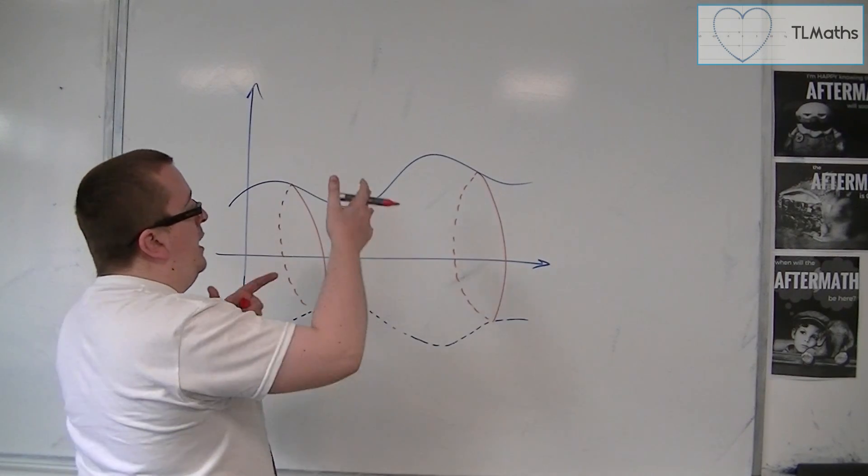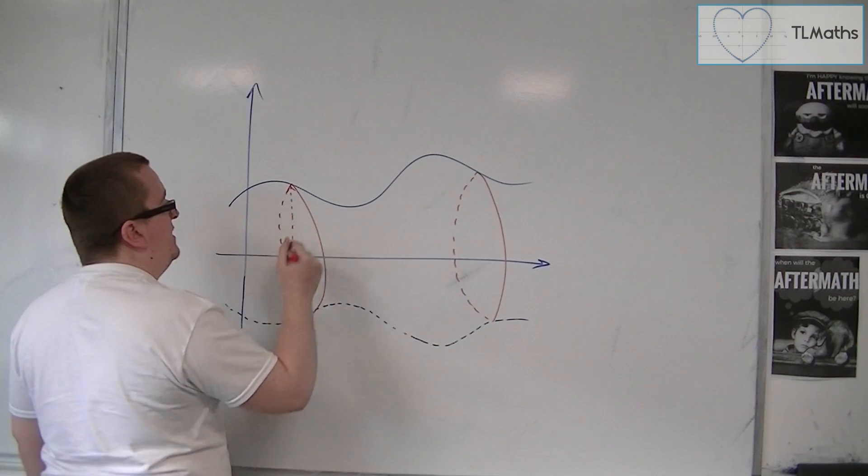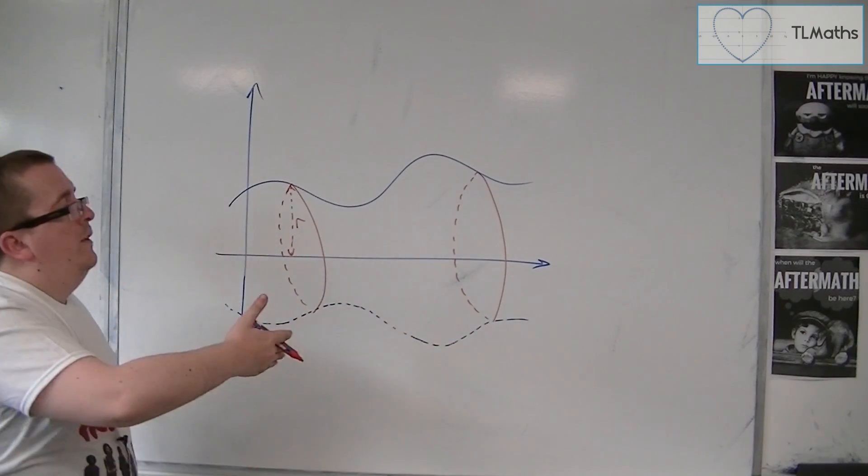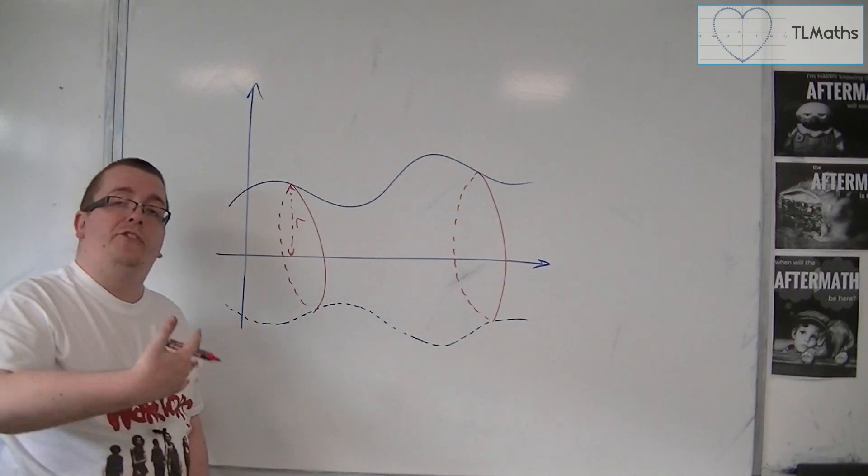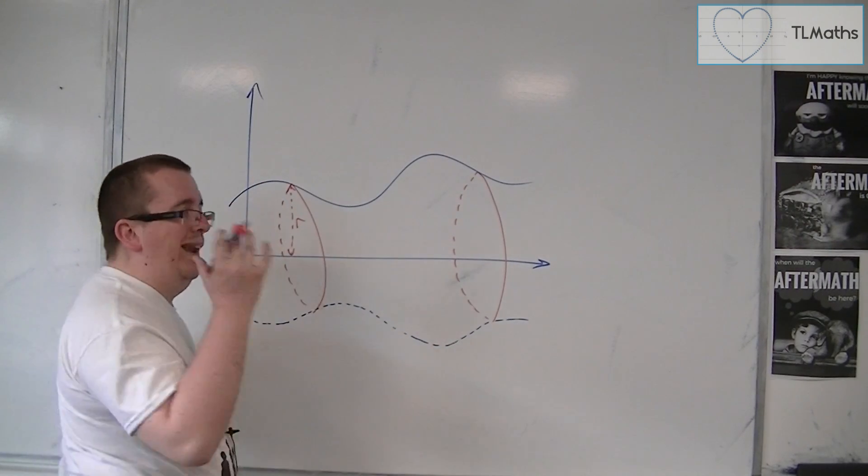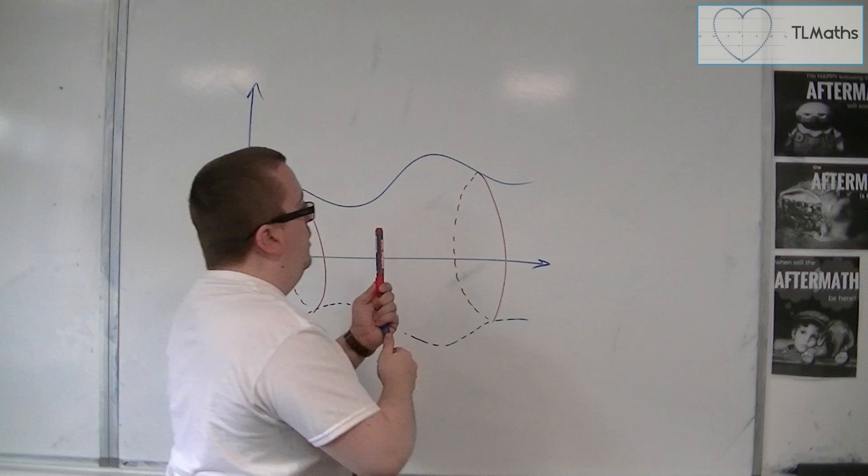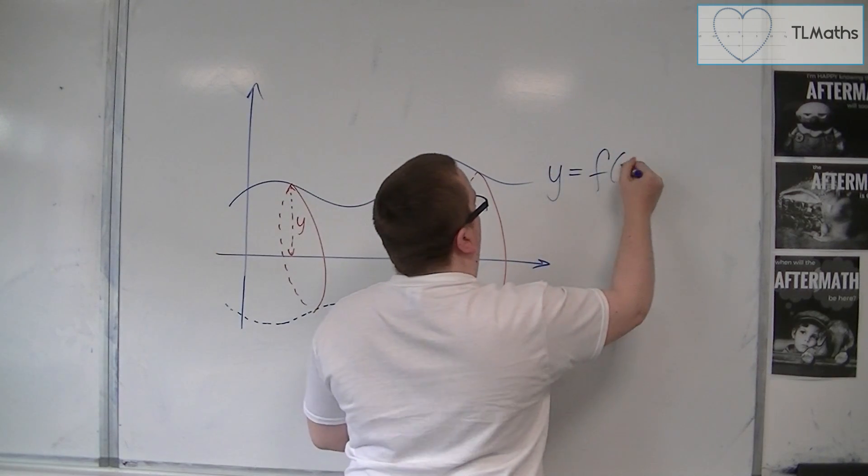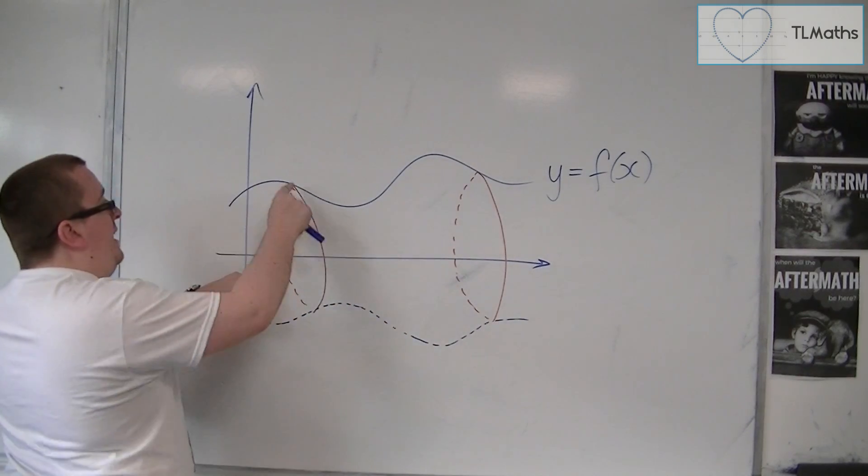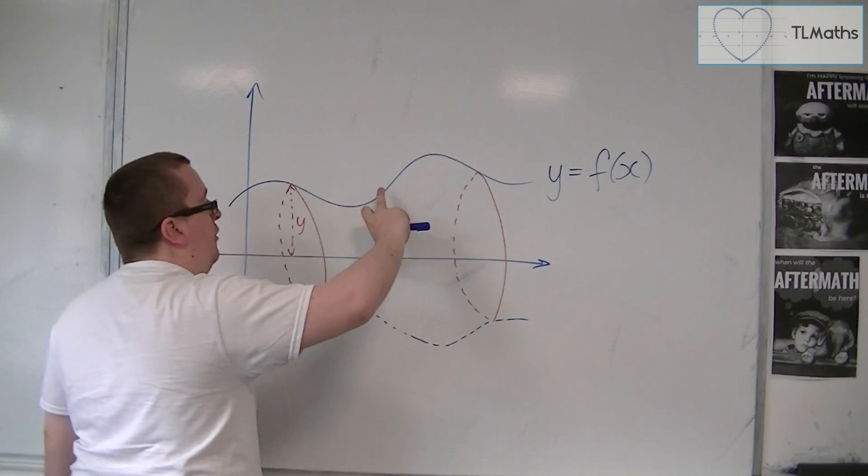For each cross section, each one will have a separate radius. Depending on where you make your cut, the circle will have a slightly different size, and so a slightly different radius. The radius and the size of the circle will actually depend on the y value. This curve will be a function of x, and for each x value, there will be a particular y coordinate. That will tell you the radius of each of the circular slices.